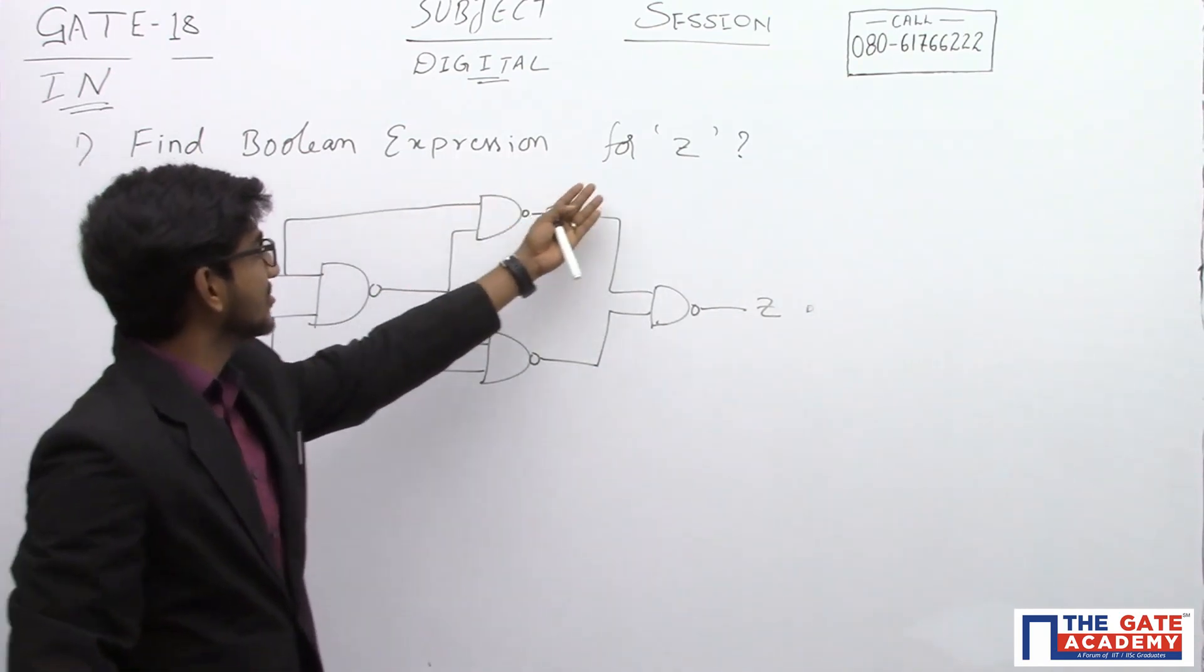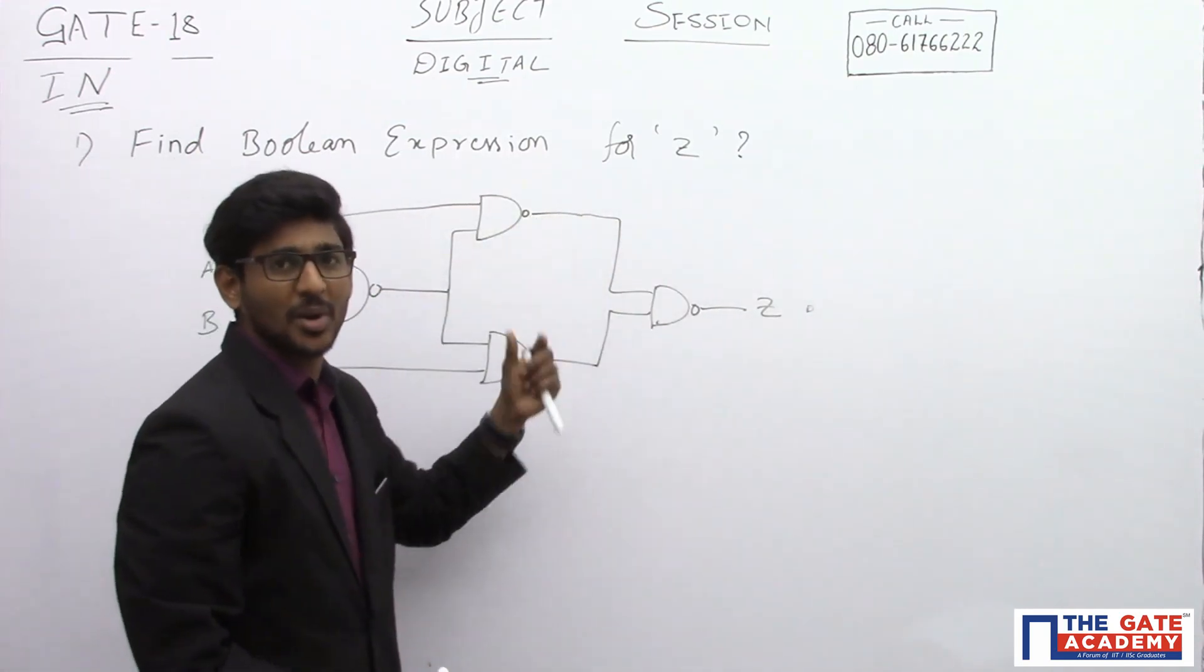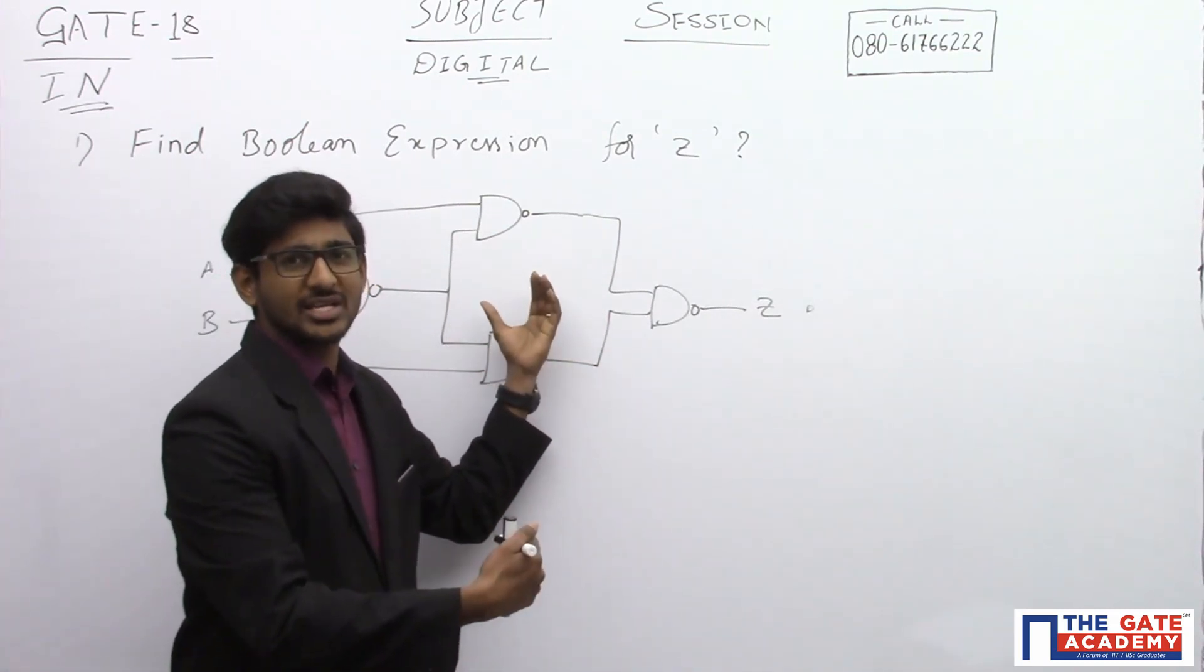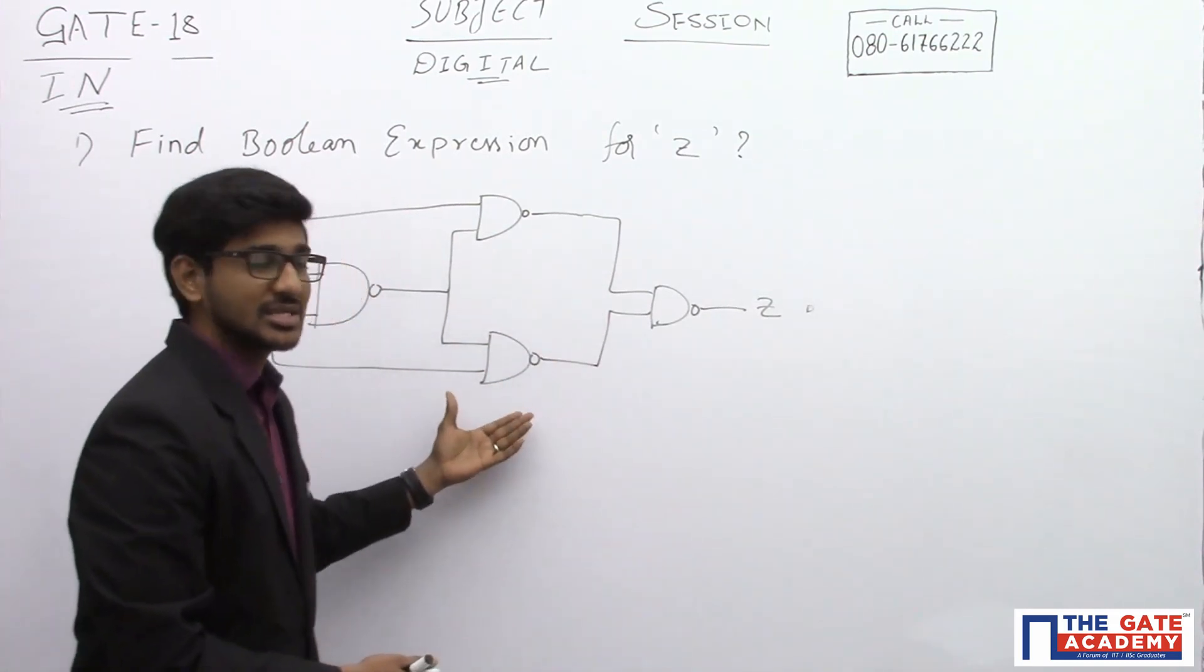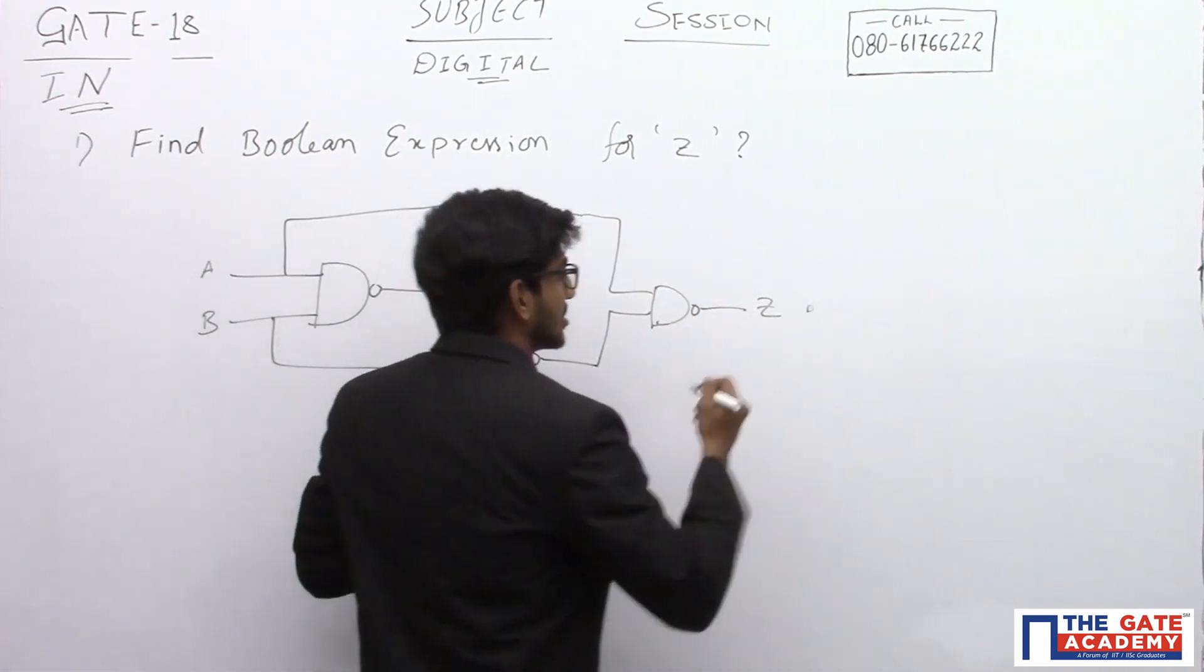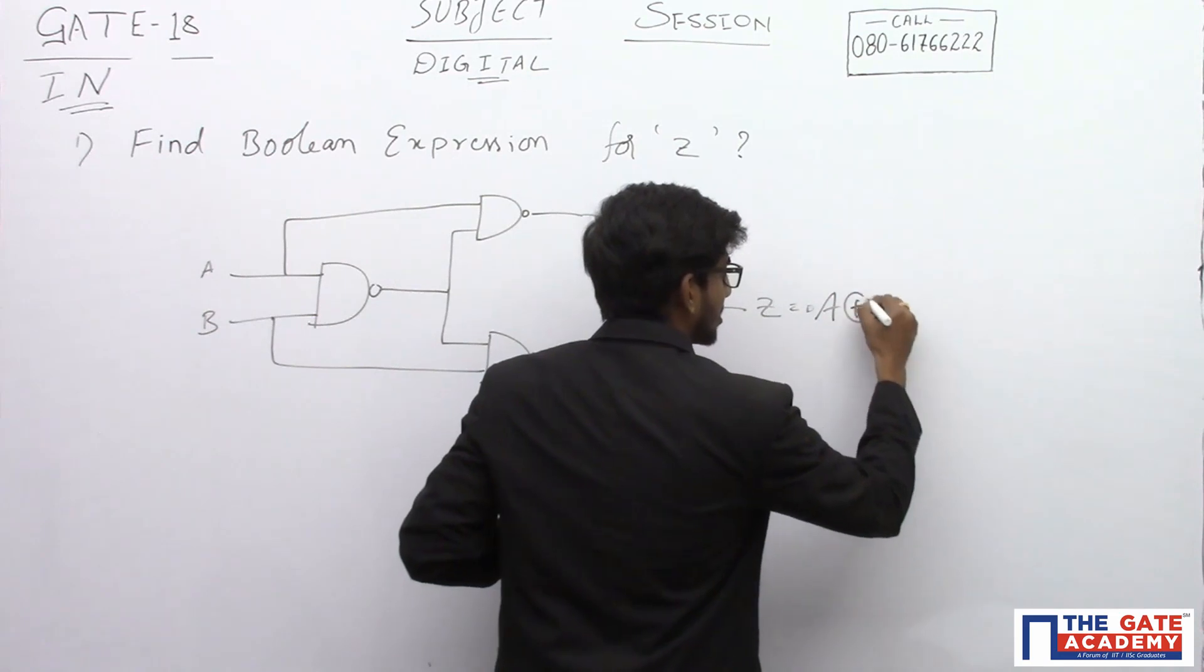Find Boolean expression for Z. This is a very simple problem. If you all know how to design half-adder using NAND gates, then definitely you will come to know that this is a circuit of A XOR B.